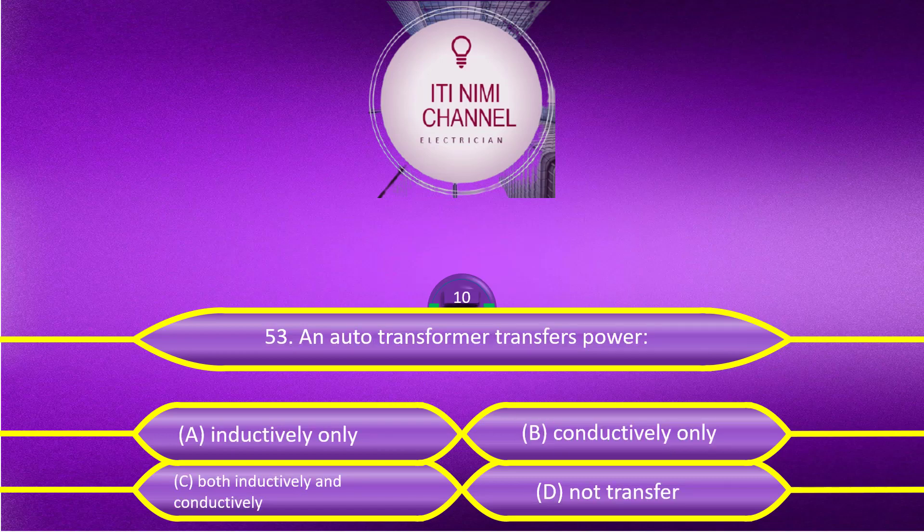An autotransformer transfers power. Option A, inductively only. Option B, conductively only. Option C, both inductively and conductively. Option D, does not transfer.